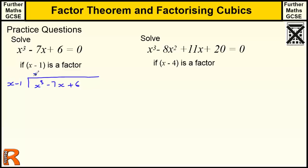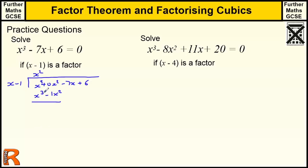What do we times x by to get x³? Well, that's x². x² times x is x³, and x² times minus 1 is minus x². There's the first problem — I haven't left a space for the x² term. So I'm going to rewrite the dividend as x³ plus 0x² minus 7x plus 6. Now I subtract: x³ minus x³ is 0, and 0x² minus minus x² is just x². Then bring down minus 7x plus 6.